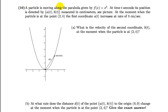A particle is moving along the parabola given by f(x) = x². At time t seconds, its position is denoted by (a(t), b(t)), measured in centimeters. So that point is the position of the particle at time t.